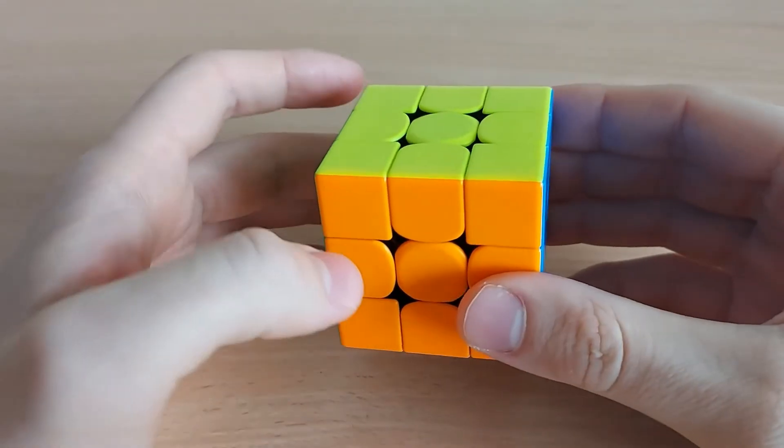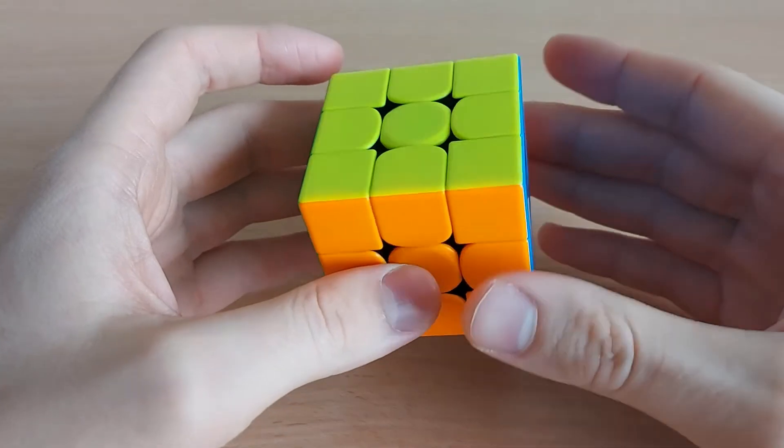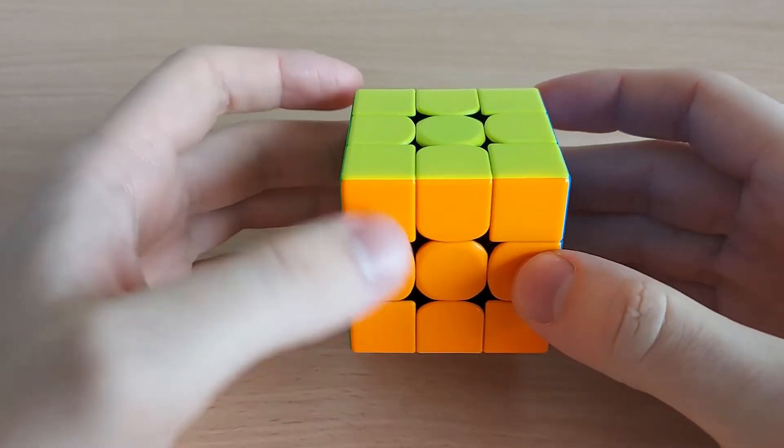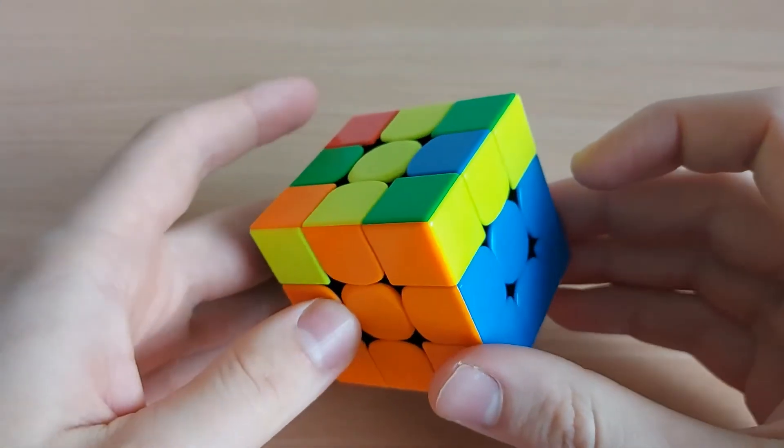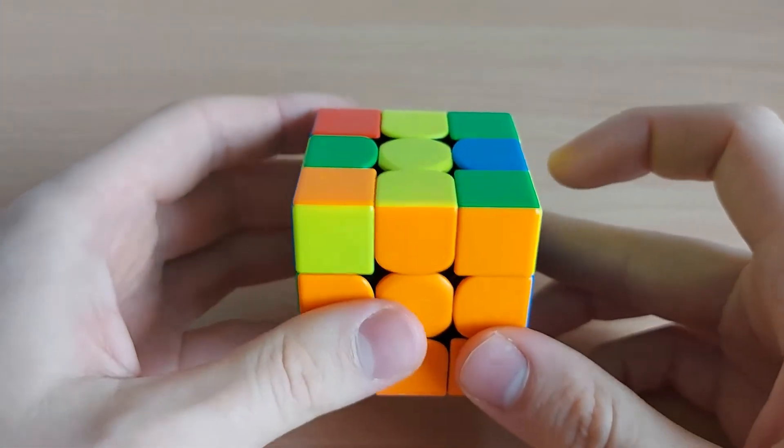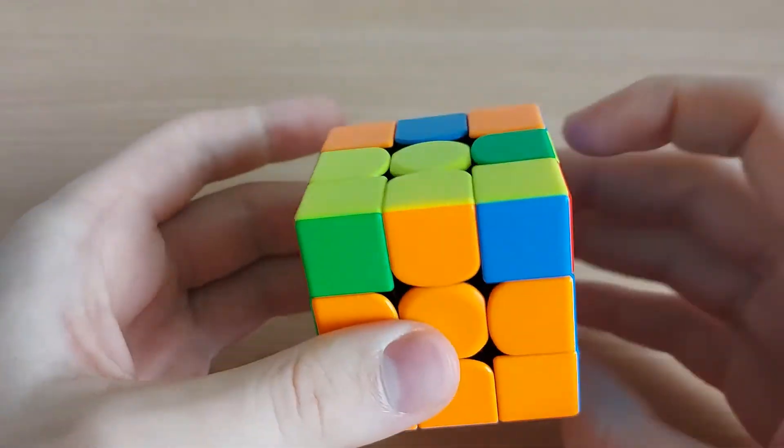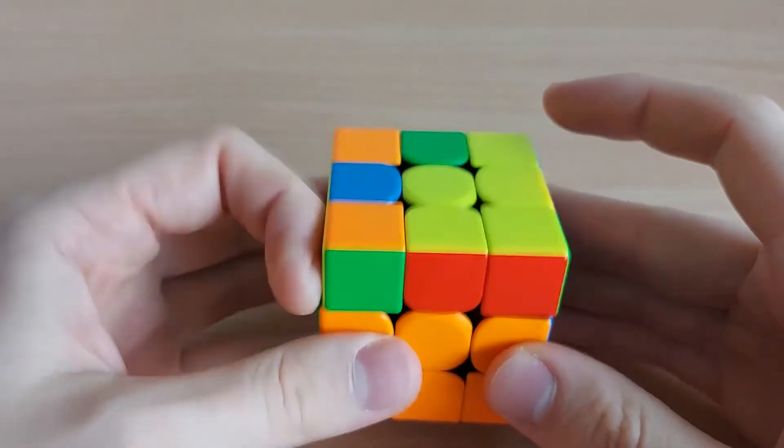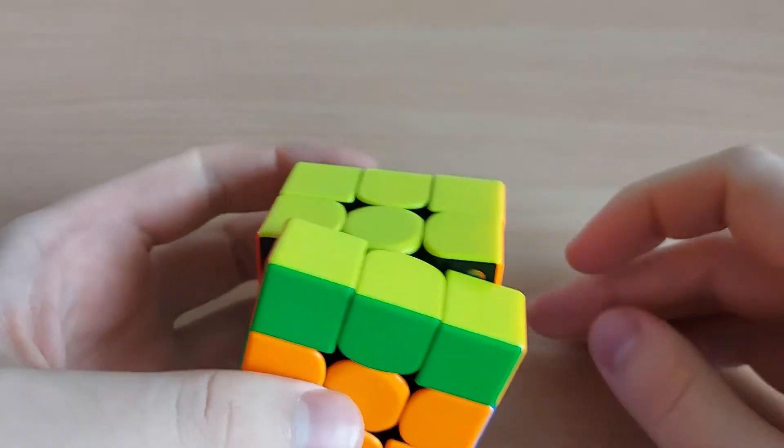Don't learn algorithms that are easy to remember but they are very long and hard to finger trick. For example, in this OLL case, what you can do is solve it, then you get this P-shaped OLL and you can do it right away.